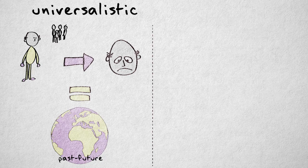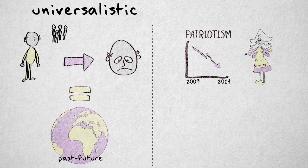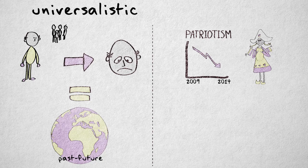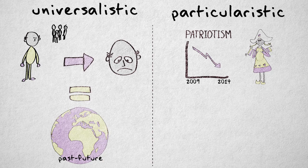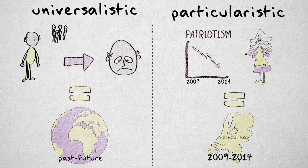Another example. Patriotism is steadily declining in the Netherlands over the last five years. This is a typical particularistic hypothesis. It's clear that this hypothesis applies to a specific country and to a specific time.